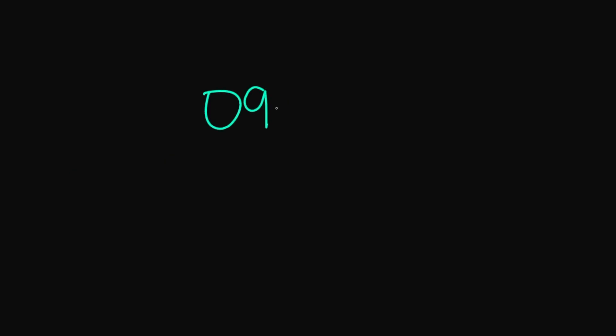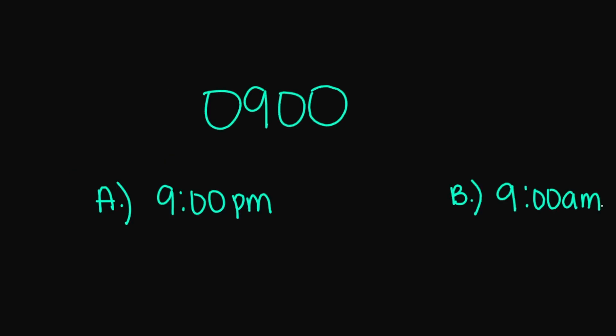What about 0900? A, 9 p.m., or B, 9 a.m.? And this is going to be B, 9 a.m., because we have our zero right in front of the hour number, so we know this is a.m.